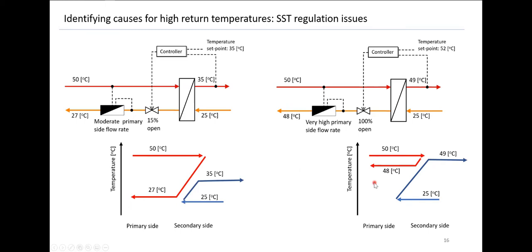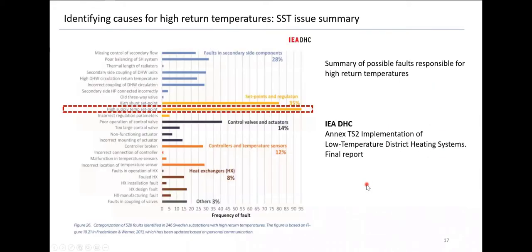This may seem silly, but a benchmark of more than 500 identified faults on substations in Sweden shows that incorrect set point regulation is the most frequent problem. It's simple to solve, but it happens often in practice.